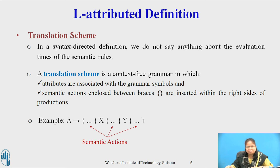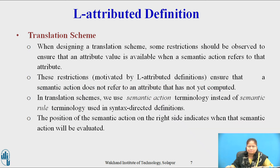Translation scheme: In a syntax-directed definition, we do not specify anything about the evaluation time of the semantic rule. A translation scheme is a context-free grammar in which attributes are associated with grammar symbols and semantic actions, enclosed in braces, are inserted within the right side of a production. When designing a translation scheme, some restrictions should be observed to ensure that an attribute value is available when the semantic action refers to it. These restrictions ensure that a semantic action does not refer to an attribute that has not yet been computed. In a translation scheme, we use the term 'semantic action' instead of 'semantic rule' as used in syntax-directed definition.